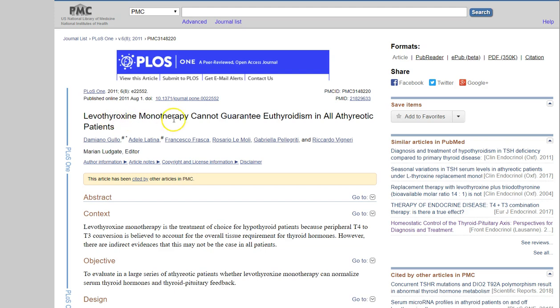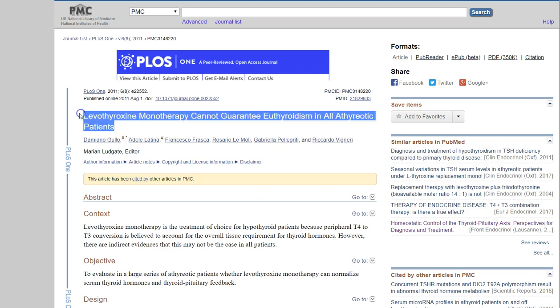So it says, Levothyroxine Monotherapy Cannot Guarantee Euthyroidism in All Athyreotic Patients. Don't let this long, fancy title confuse you. What it is saying is using Levothyroxine alone, which is a T4 medication like Synthroid, cannot guarantee a normal thyroid state in patients who have had their thyroid removed.